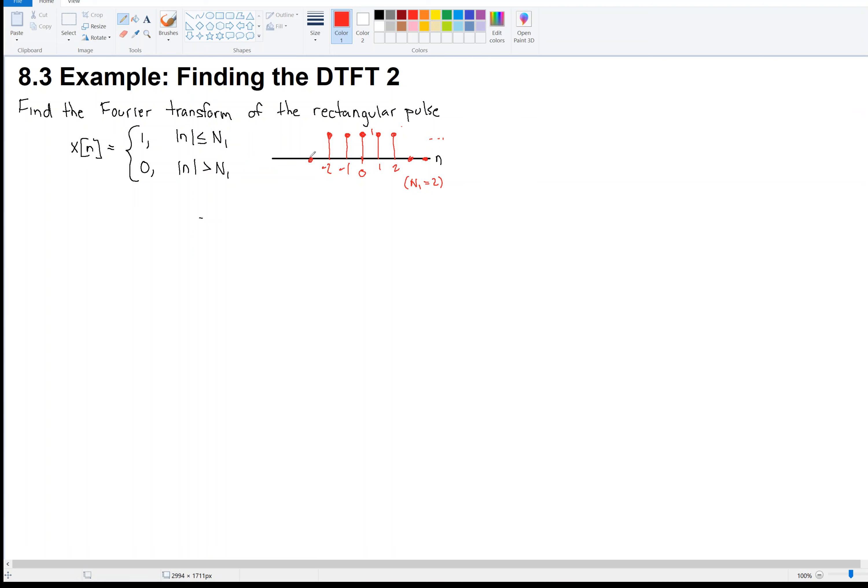And negative 3, negative 4, negative 5, the absolute value is not less than or equal to 2. So those are all 0 as well. So this is the rectangular pulse that we're talking about. It alternates from 0 to 1. I guess it doesn't alternate, but it goes from 0 to 1, back to 0.